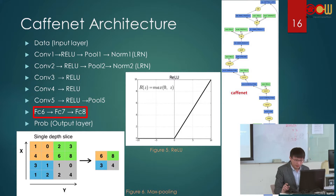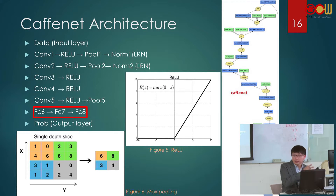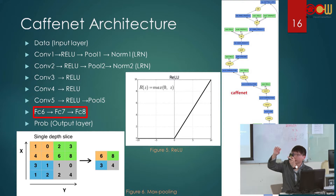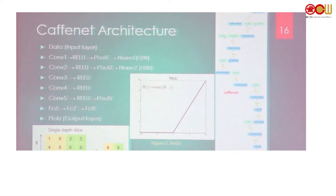Here are the fully connected layers. Every neuron in the fully connected layers is connected to every neuron in the last layer, and each neuron in the last layer is connected to every fully connected neuron here. Let's continue our example.